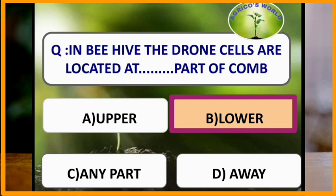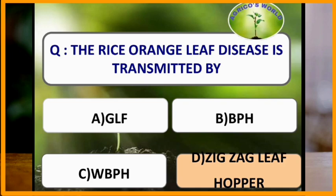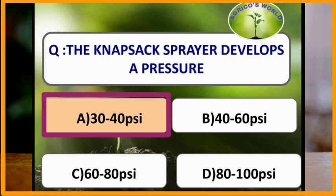In rice, orange leaf disease is transmitted by the zigzag leafhopper. The knapsack sprayer develops a pressure of 30 to 40 psi.